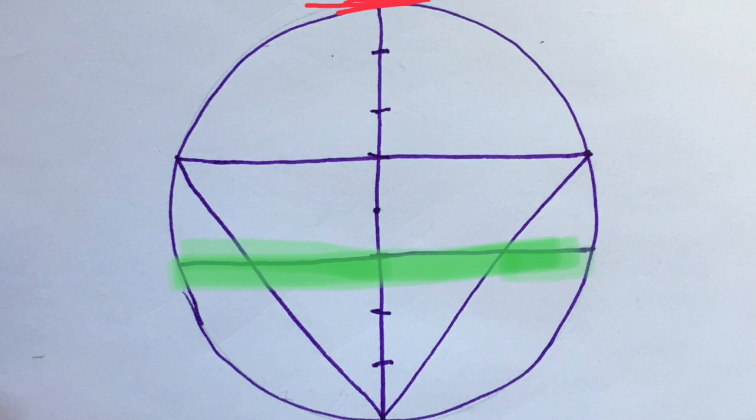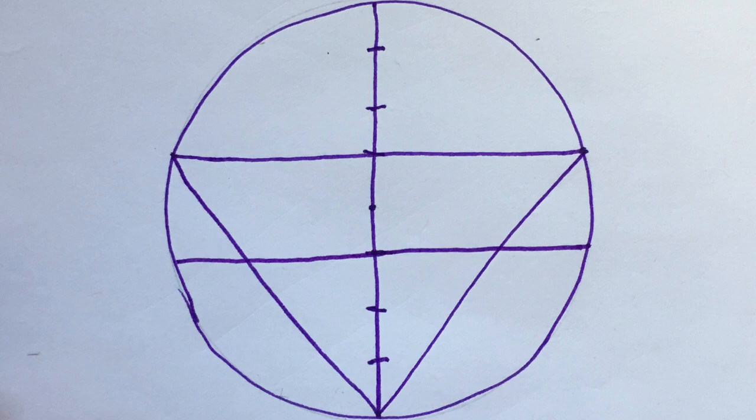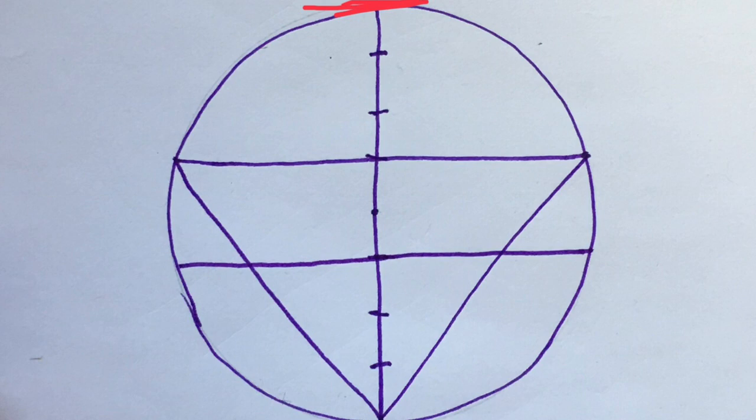The second horizontal line is the point just below the bindu. Draw that horizontal line so it touches both sides of the circle. Now connect that line to the top point where the vertical line touches the top of the circle.